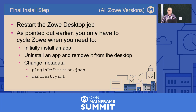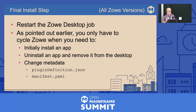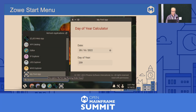For all versions, there's a final install step: you have to restart the Zoe desktop app. Everything we've done basically sets up what's necessary so that when Zoe starts up, it initializes your app. You only need to cycle Zoe when you initially install an app, when you uninstall an app and want to remove it from the desktop, and when you change the metadata. And if you followed all the instructions, there's My First App showing in the start menu running under the Zoe desktop.